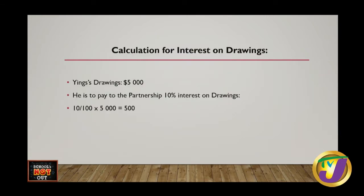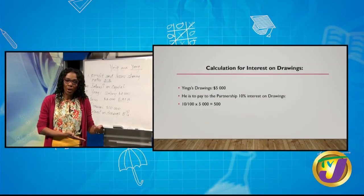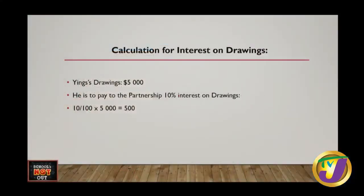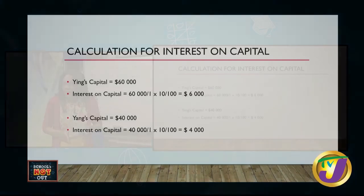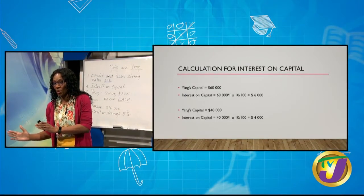Let's do some workings based on the agreement. How do we calculate interest on drawings? Yin's drawings were five thousand dollars, and the interest on drawings is ten percent. So it's ten divided by one hundred, times five thousand dollars. The answer is five hundred dollars. Yin's interest on drawings will therefore be five hundred dollars. We're doing all these calculations to plug them into the profit and loss appropriation account.